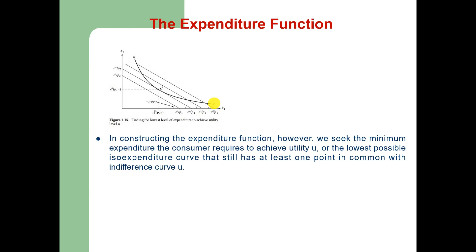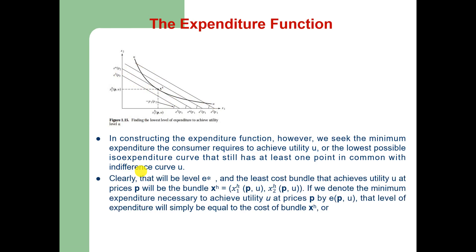In constructing the expenditure function, we seek the minimum expenditure the consumer requires to achieve utility U — that is, the lowest possible iso-expenditure curve that still has at least one point in common with the indifference curve. Only one point is common between this tangent budget line and the indifference curve U. Clearly, that minimum level is shown by E-star, and the least-cost bundle that achieves utility U at price vector P is the bundle X-H.